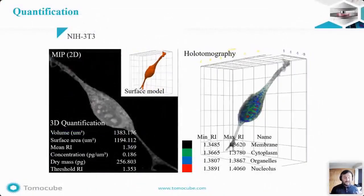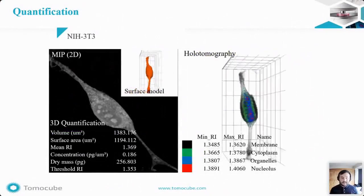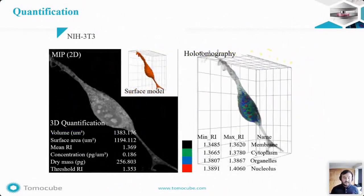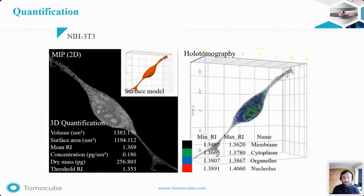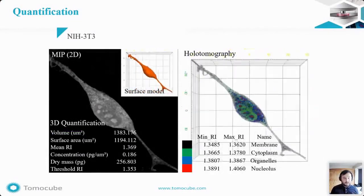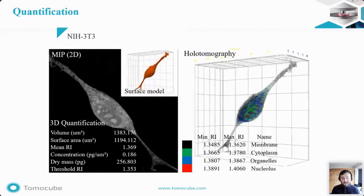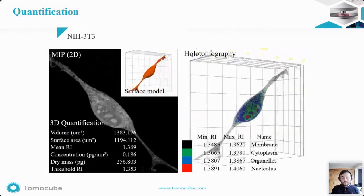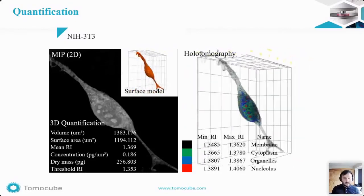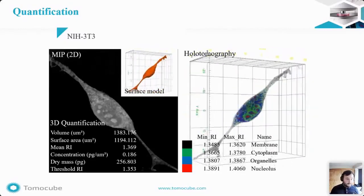As mentioned, holotomography is more than qualitative — it is also quantitative. This is achieved using refractive index measurements of the cell's components. The software is then able to output measurements like volume, surface, dry mass, and so on.